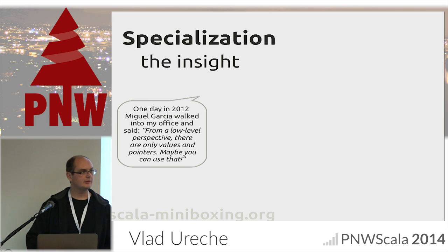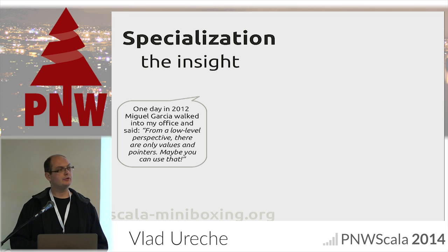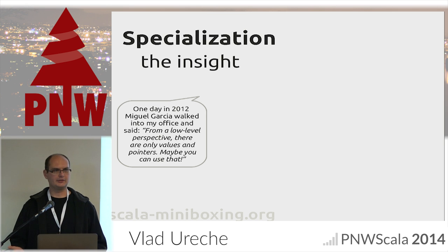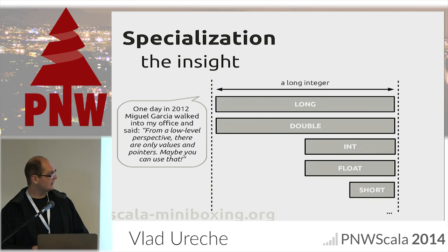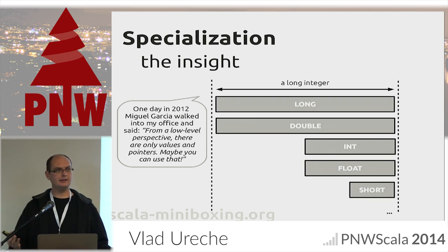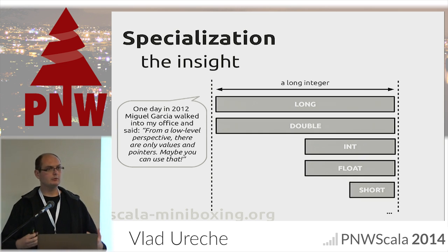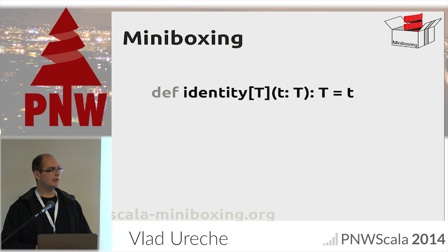Can we do something better? There's an insight. In 2012, Miguel Garcia — who developed the new backend for the Scala compiler — walked into my office thinking aloud: from a low-level perspective, there are only values and pointers on the JVM, nothing in between. I realized that all primitive values actually fit into a long integer. So if we could encode them in a long, we would not need to create so many specialized variants. And thus miniboxing was born.